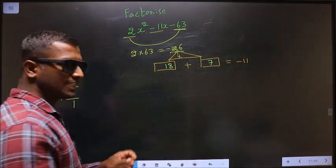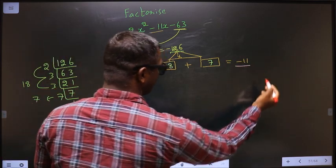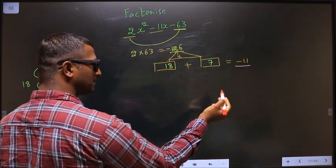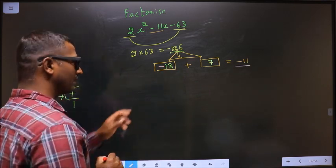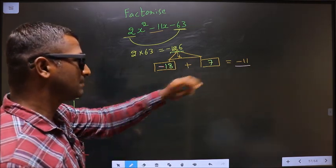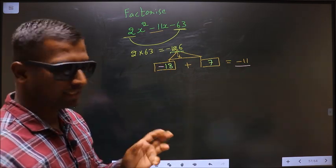Now we should adjust the signs. I should get minus 11 here. That could only be possible if I place negative here. Minus 18 plus 7 is minus 11. Minus 18 into 7 is minus 126. Next.